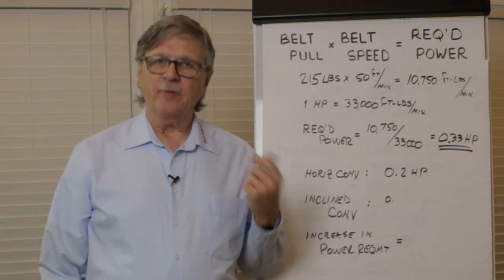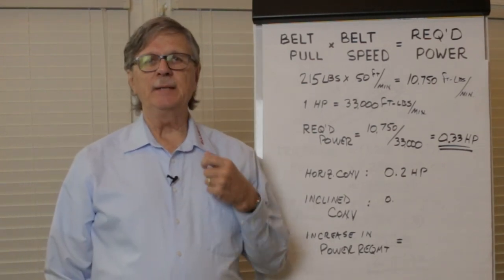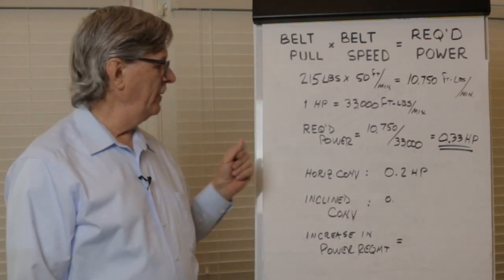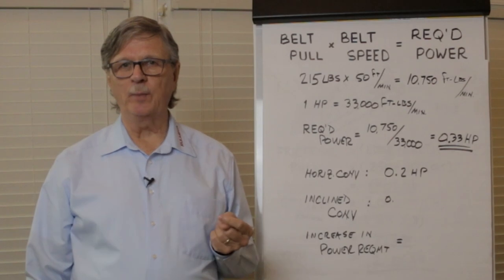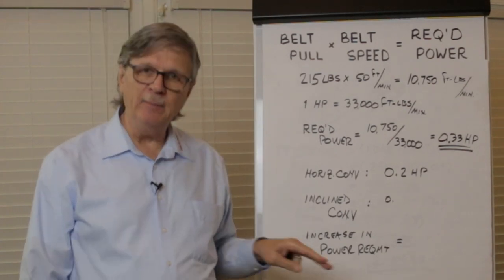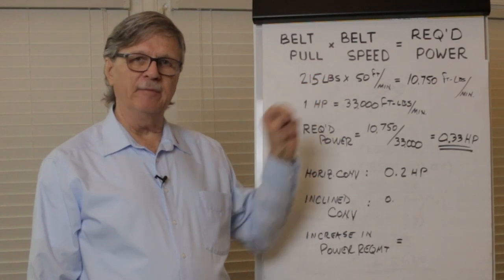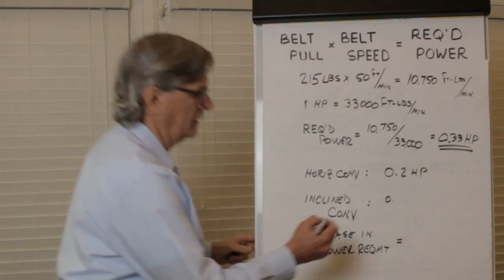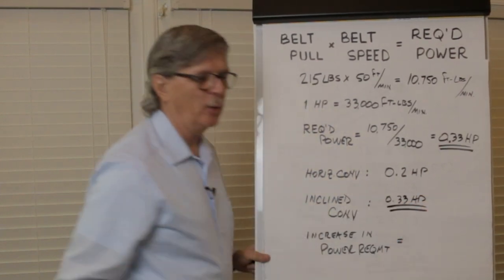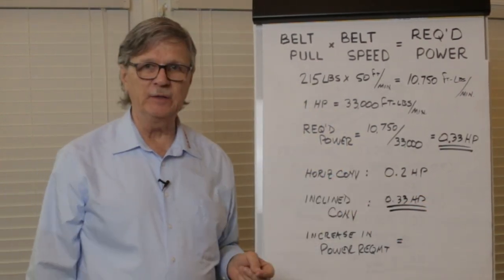For those of you that have seen the first video in which we described how to calculate pull and power on a horizontal conveyor, you may remember that the power requirement was 0.2 horsepower. All things were kept the same except that we made an inclination of three feet and we determined that the power required with the inclined conveyor is 0.33 instead of 0.2.